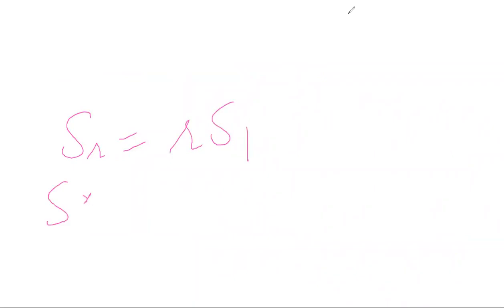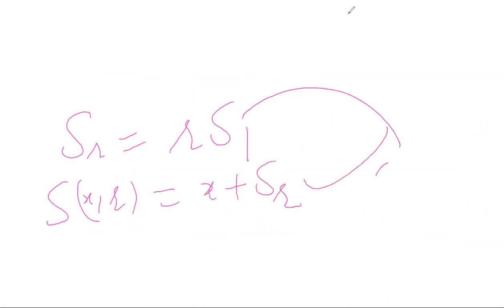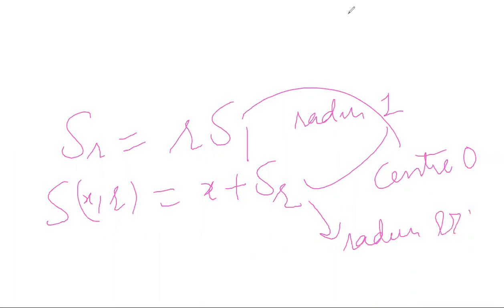So therefore S(x,R) equals x plus S(R), and S(R) equals R times S(1). The center of both balls is 0, but S(1) has radius 1 and S(R) has radius R, which is always greater than 0. These are the two remarks which we will use in the open mapping theorem. I hope the point is clear to all.